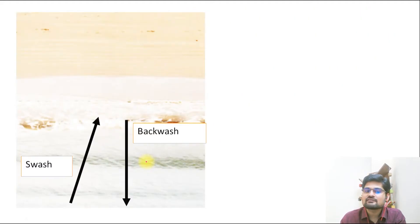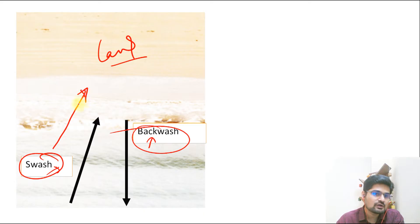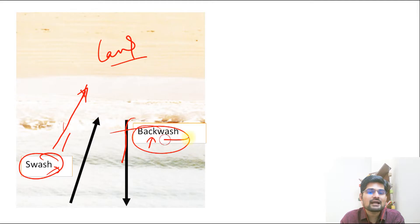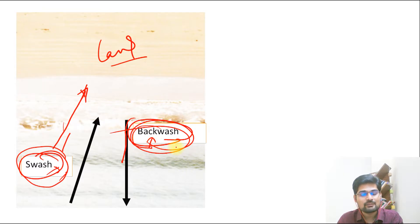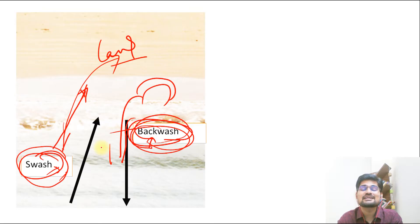There are two kinds of waves we need to understand: backwash and swash. Swash is the wave moving towards the land, while backwash is the wave returning from the land. It all depends on whether there is dominance of swash or backwash. If there is more swash, more deposition is happening on the land. If there is more backwash, more material is being removed from the land.